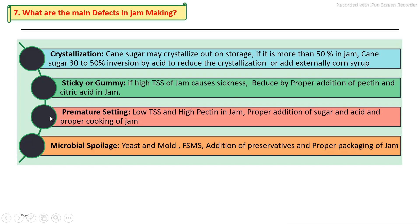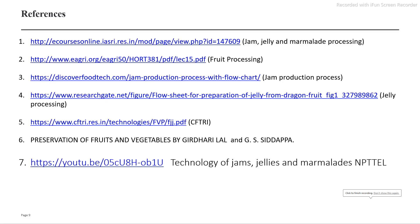Then there is premature setting — that means improper judging of the end points — which causes the jam consistency not to form properly. Then microbial spoilage may occur if proper cooking is not done or if the addition of preservatives is not done properly. These are the references used for the preparation of this presentation. Thank you very much. To be continued.